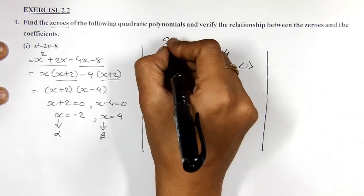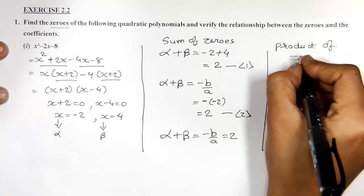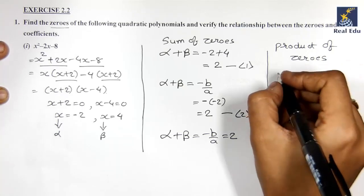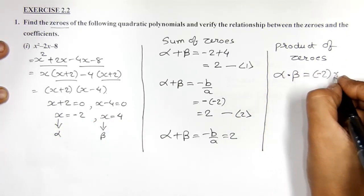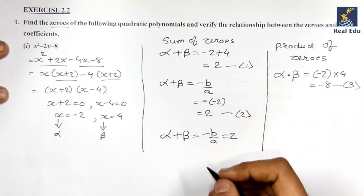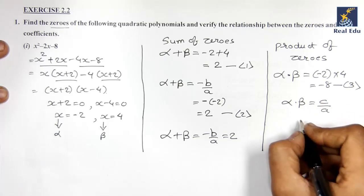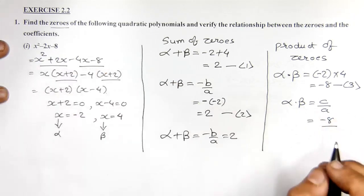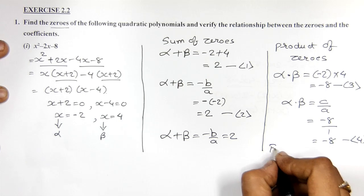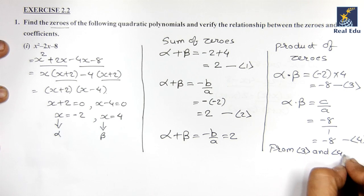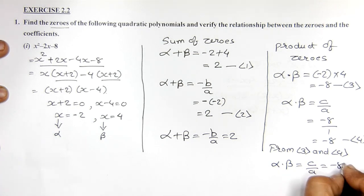Sum is verified, but we also have to go for the product of the zeros. Product of zeros means multiplication of both: alpha into beta equals minus 2 into 4, which gives minus 8. The expression for product of zeros is c by a. Here c is minus 8 and a is 1, so c by a is also minus 8. From these two results, we can conclude that alpha into beta equals c by a equals minus 8, which is verified.